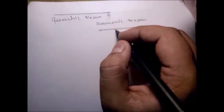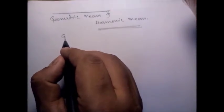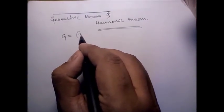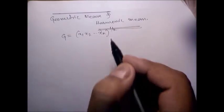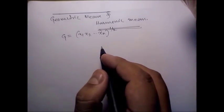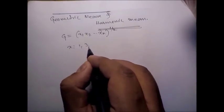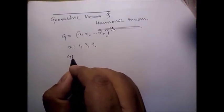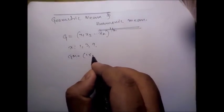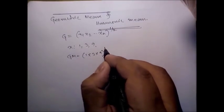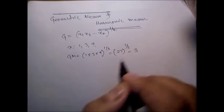Hello friends. In this video I am going to discuss geometric mean and harmonic mean. The formula of the geometric mean is x1·x2·...·xn to the power 1/n, where n is the number of data. Suppose x is 1, 3, 9. So geometric mean for this data is 1×3×9 to the power 1/3, which is 27 to the power 1/3, that is 3.